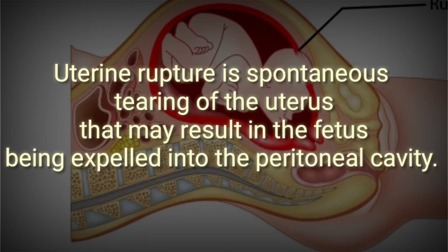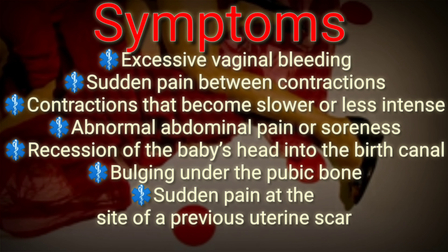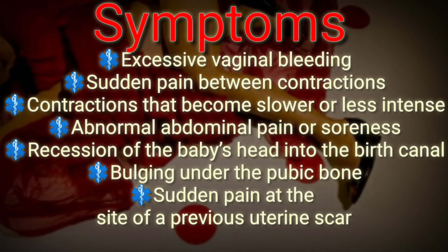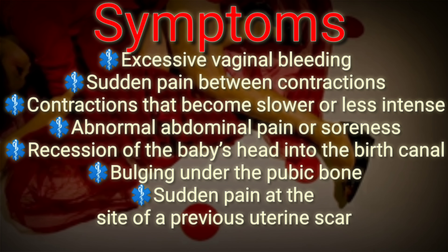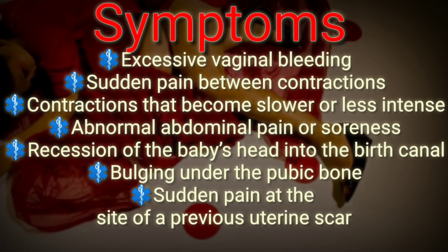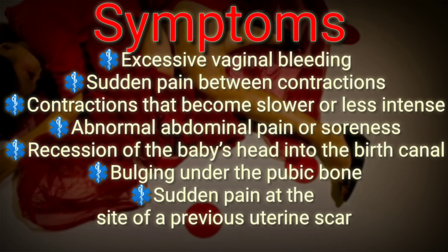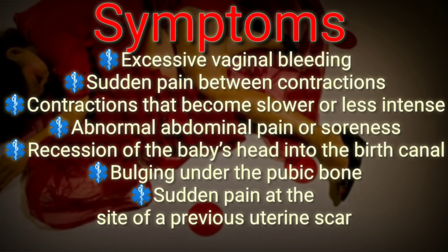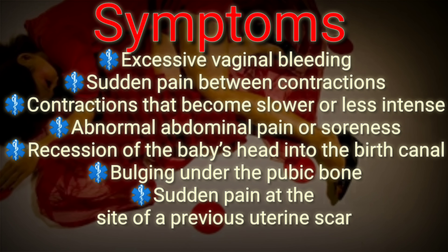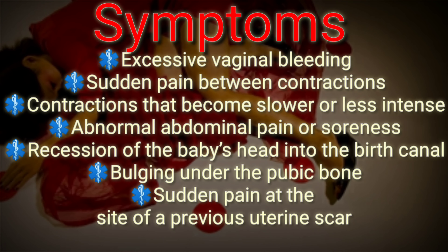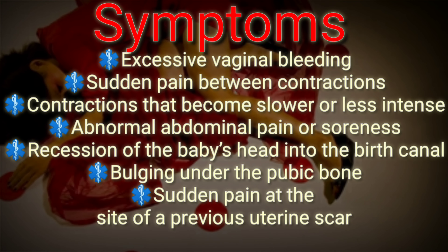What are the symptoms of uterine rupture? A variety of symptoms are associated with uterine rupture. Some possible symptoms include: excessive vaginal bleeding, sudden pain between contractions, contractions that become lower or less intense, abnormal abdominal pain or soreness, recession of the baby's head into the birth canal, and bulging under the pubic bone.